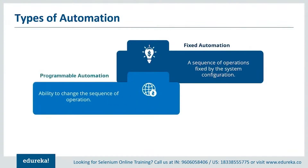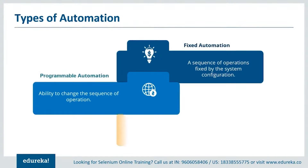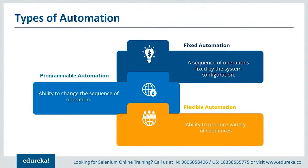Programmable automation can be used to change the sequence of any operation based on the requirements specified by the user. It has made it to the front end of the user interface by providing various options to the user to edit the sequence as per their requirements. Flexible automation can inherit both fixed as well as programmable automation. It has the ability to produce a variety of sequences that are not just limited to one static type of automation.